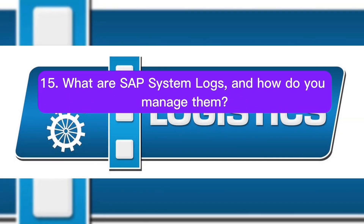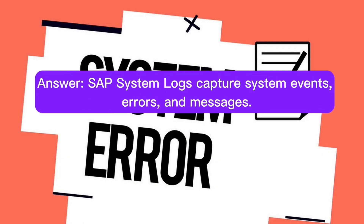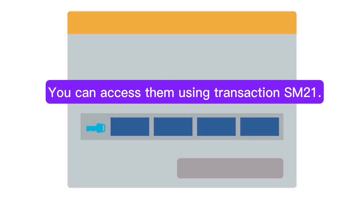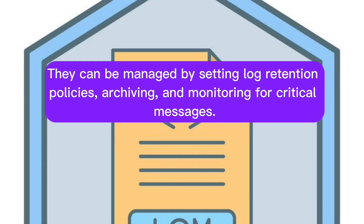Question 15: What are SAP system logs, and how do you manage them? SAP system logs capture system events, errors, and messages. You can access them using transaction SM21. They can be managed by setting log retention policies, archiving, and monitoring for critical messages.